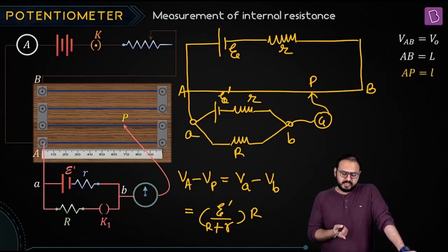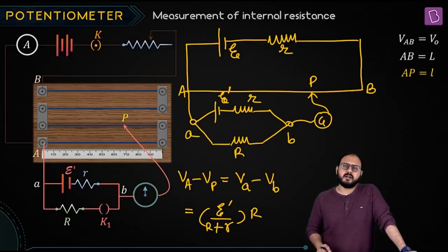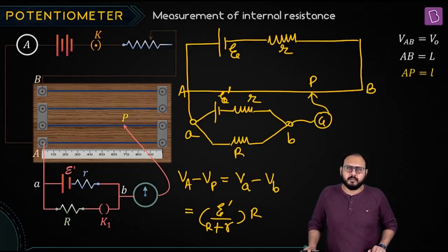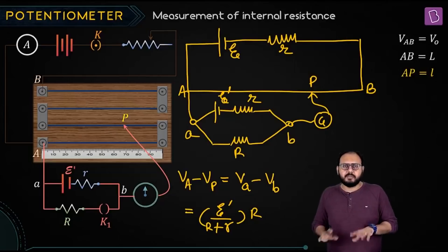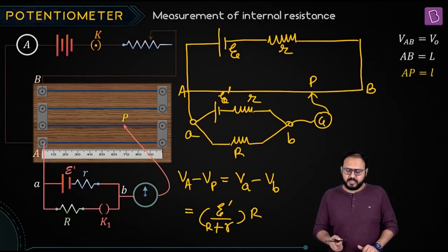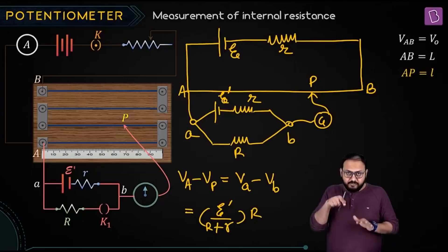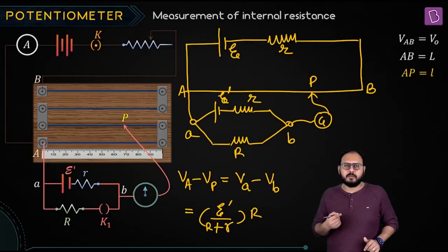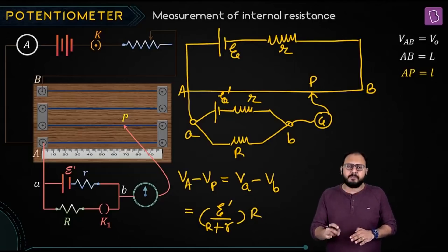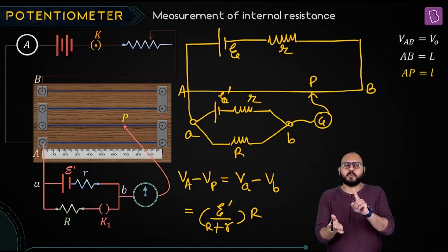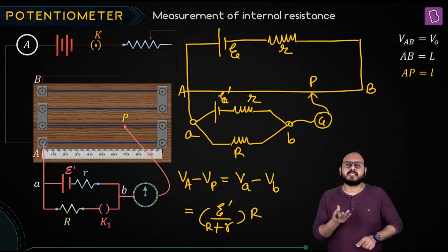Look at this diagram. This key — if I actually open the key, the lower branch becomes redundant, and VA minus VP will simply equal E dash. So you can find out unknown EMF, comparison of two EMF ratios, and unknown internal resistance. In this very diagram: key closed — effective circuit has E dash, small r, and capital R, giving VA minus VP = E dash upon (R + r). Key open — lower branch gone, VA minus VP simply equals E dash.